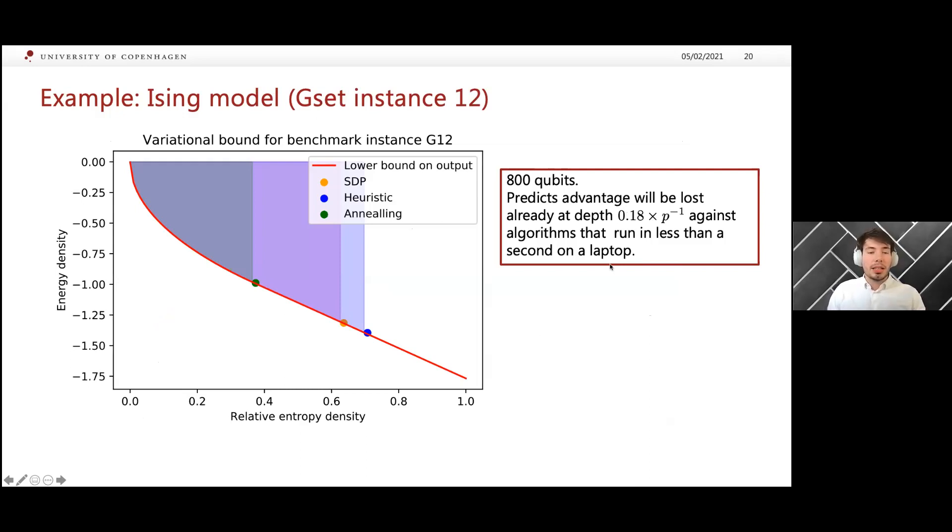Here's an example from the G set of instances. These are instances of max cut that are used to benchmark heuristic solvers. We implemented this variational bound and computed it for the range of the partition function for which you can evaluate it approximately efficiently. This is not even the plot showing a large range of values of beta, just evaluating at the efficient range. In principle, this plot could be even worse for quantum.